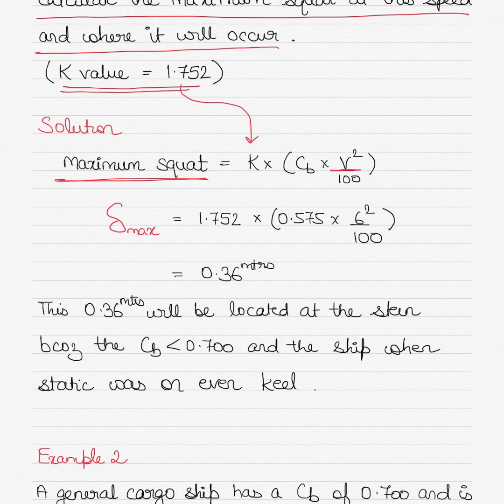So 1.752 is given to us, multiplied by the block coefficient given in the question, and so is the velocity of the vessel. Square of the velocity divided by 100. Simply put in the values in the calculator and you will get the maximum squat as 0.36 meters.